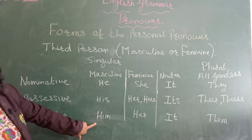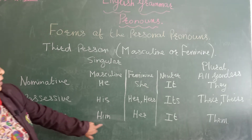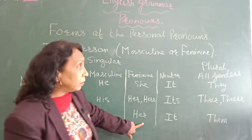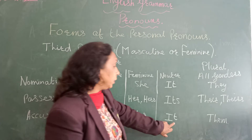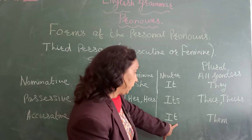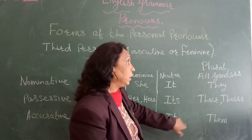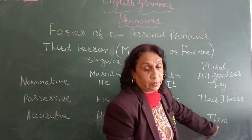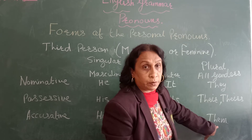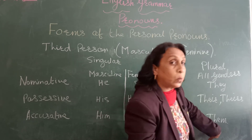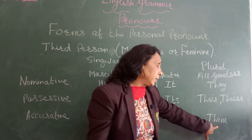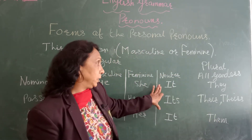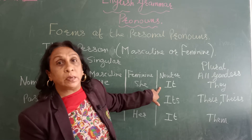Now look at the accusative case. In the singular form for masculine we use 'him', for feminine we use 'her', and in the neuter form we use 'it'. In the plural we use 'them'. Is it clear, children?